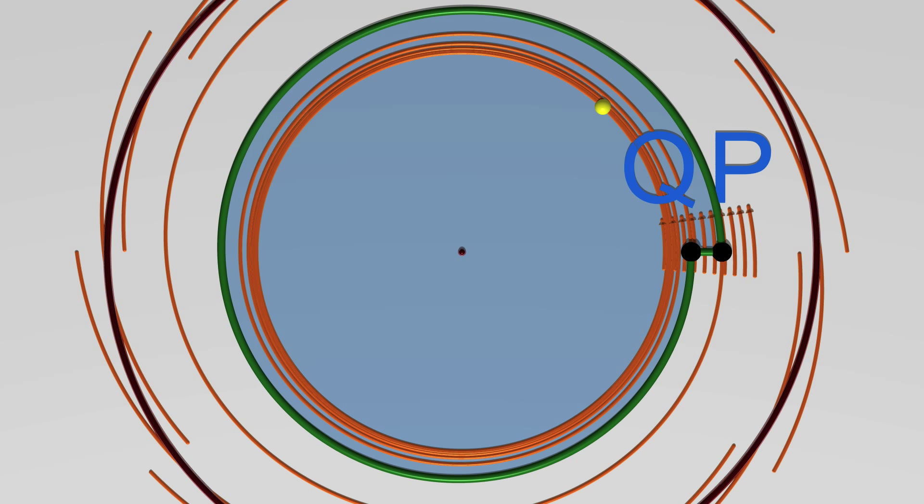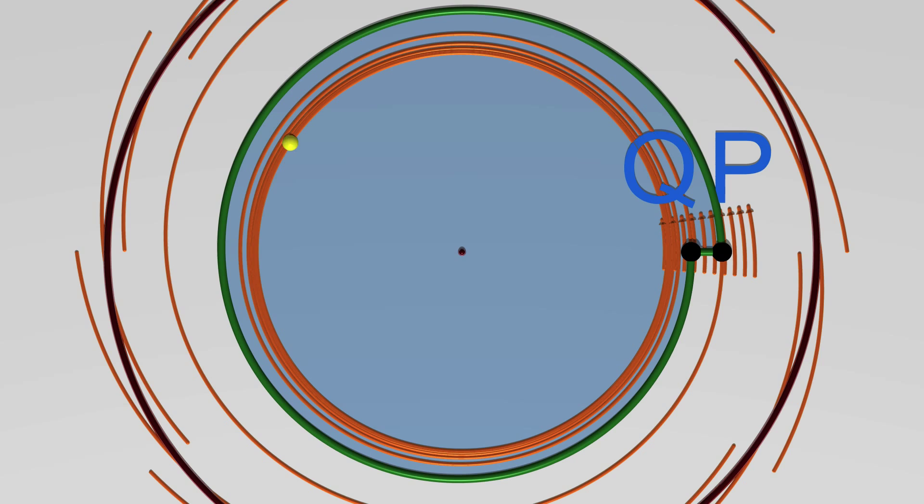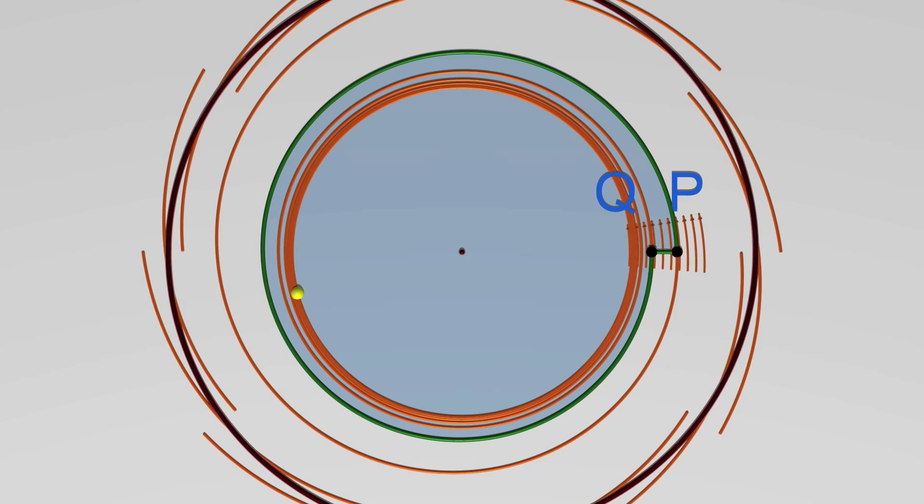The trajectory starting from Q cannot escape through the line Q-P either. There, the vector field is coming in, not going out. You can see that the trajectory from P may well return very close to P, but then it is condemned to never escape.